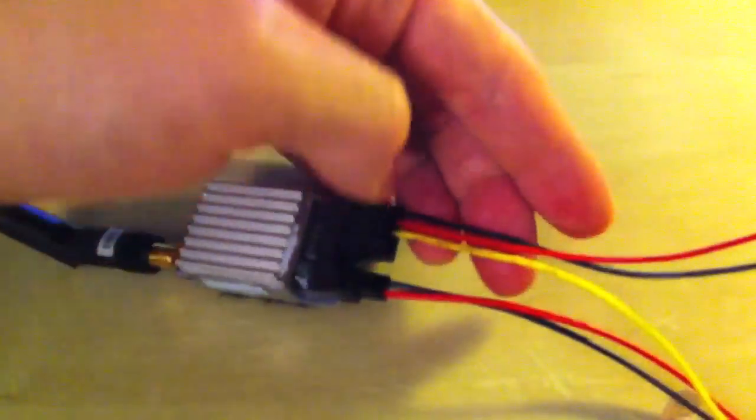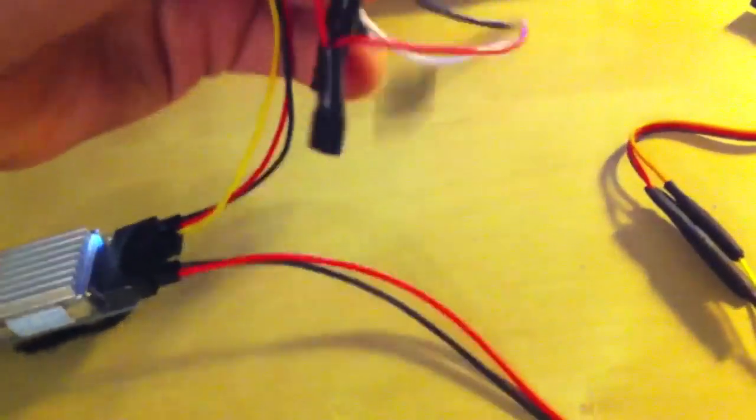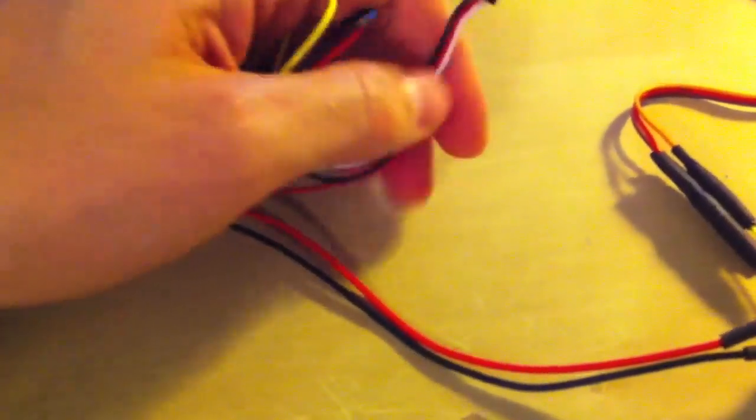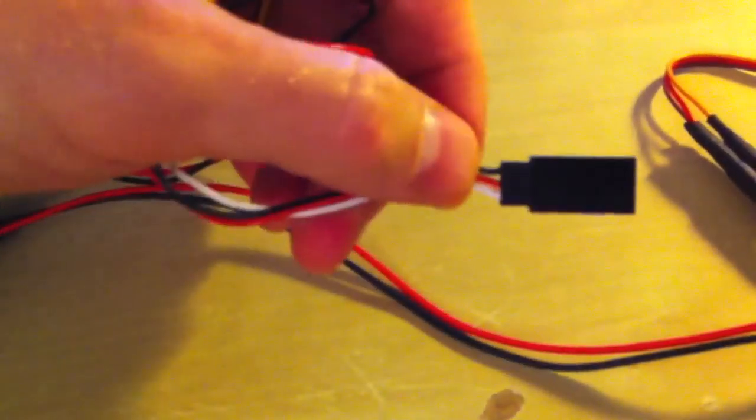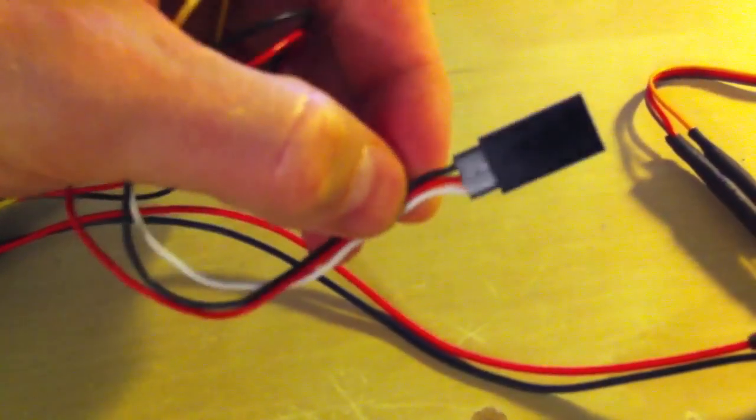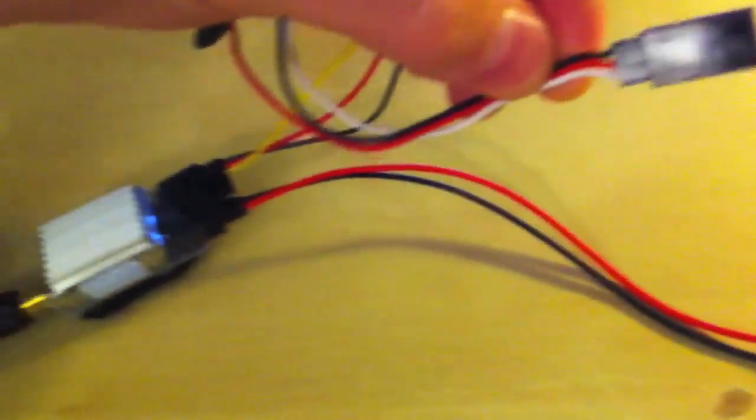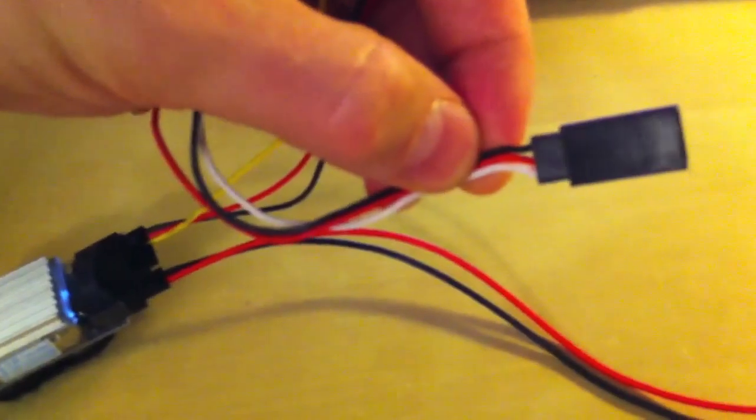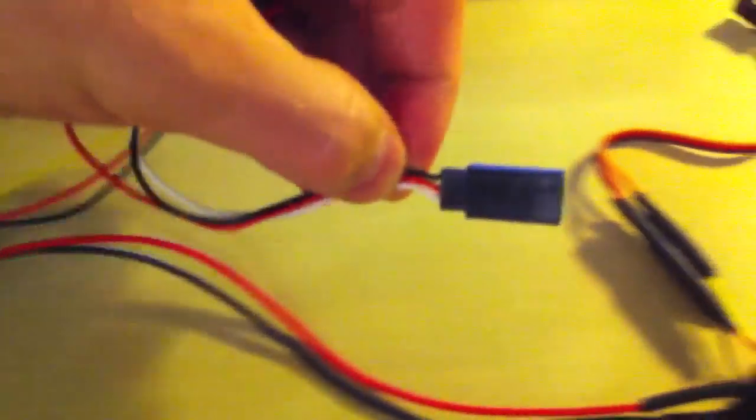So these three wires I wired into a servo plug. And I had black to black, red with red. And this yellow wire from the transmitter goes to the white wire on here. And that carries the video.